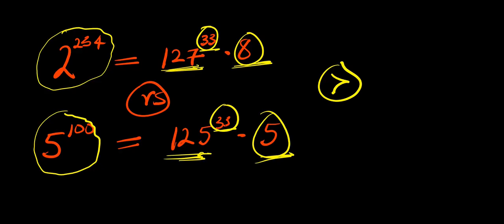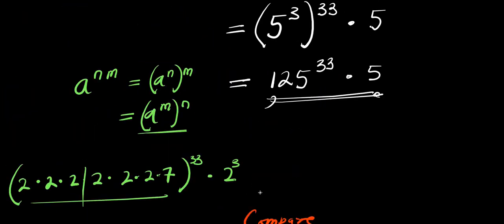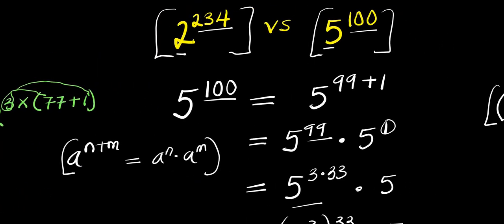So the bigger number is 2 to the power of 234, while the smaller number is 5 to the power of 100. We have achieved this without the use of a calculator. I believe you have enjoyed this video — don't forget to subscribe and share. Thank you and see you again.